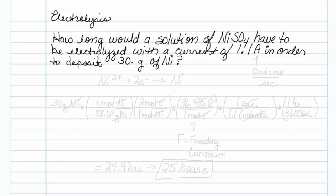This is how to do a problem with electrolysis. How long would a solution of nickel sulfate have to be electrolyzed with a current of 1.1 amps in order to deposit 30 grams of nickel?